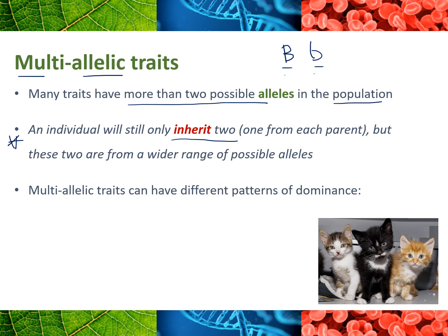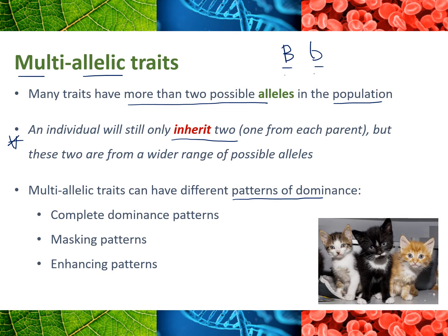The way that multi-allelic traits work is that they can have different patterns of dominance, and we'll look at this as we look at blood types. You can get complete dominance — where, let's say with three alleles, you might have one allele that is dominant over two other ones. You can get some that kind of mask other alleles, or you can have ones that enhance the traits of other alleles. But we're really going to focus just on a fairly simple dominant and recessive pattern.